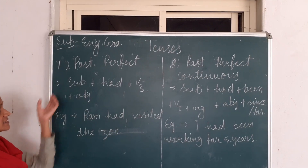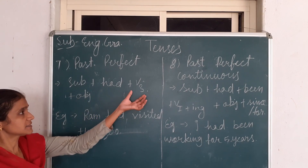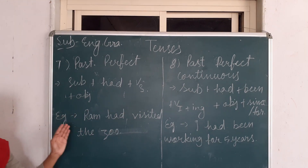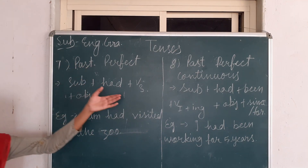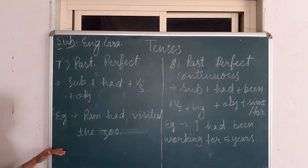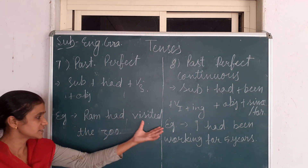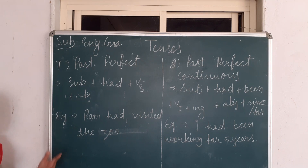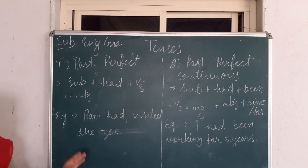The next tense is Past Perfect Tense. Sentence structure: Subject + had + third form of the verb + Object or Complement. In perfect tense, we always use the third form of the verb. Example: 'Ram had visited the zoo.' Negative: 'Ram had not visited the zoo.' Interrogative: 'Had Ram visited the zoo?' — with a question mark. Interrogative negative: 'Had Ram not visited the zoo?' — with a question mark.